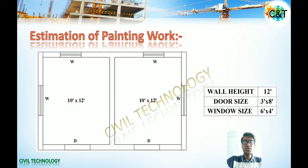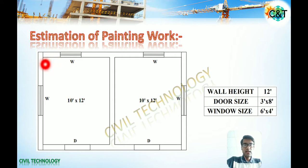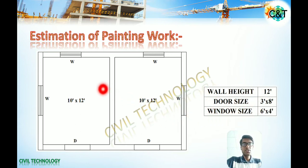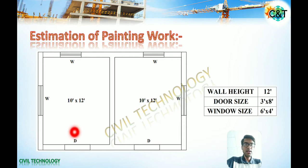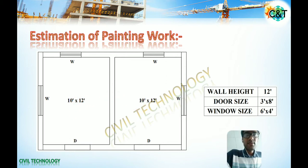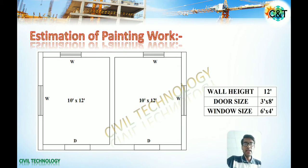Here I take the example of a two-room house. The plan of the house you can see on screen. The dimension of each room is 10 feet by 12 feet — length 10 feet and width 12 feet. Wall height is 12 feet. Both rooms have two windows on opposite sides of the wall and one door on the front side, so there are three openings in each room. Whenever we calculate the wall area, we have to deduct the area of these openings to get the net painting area.